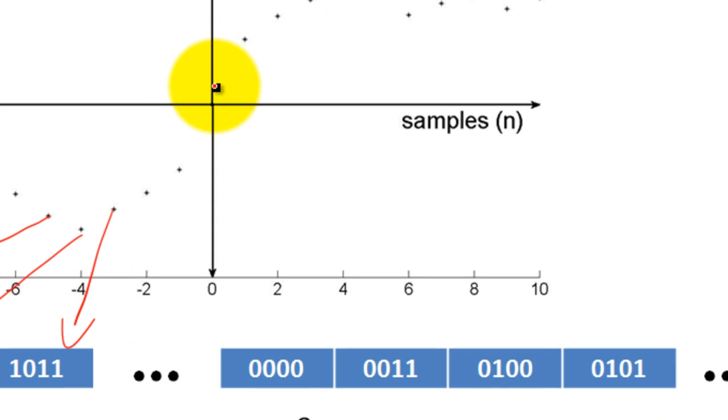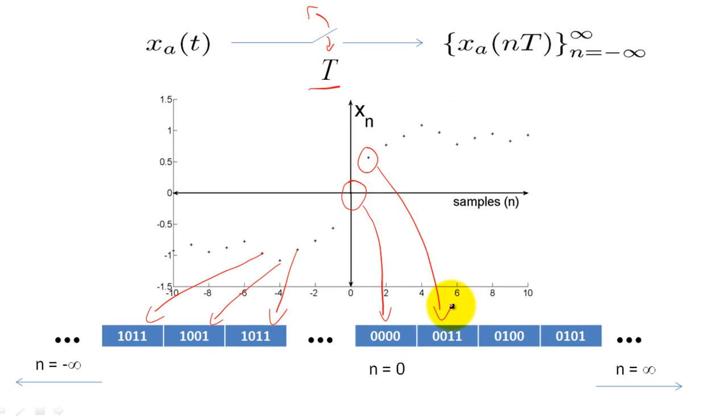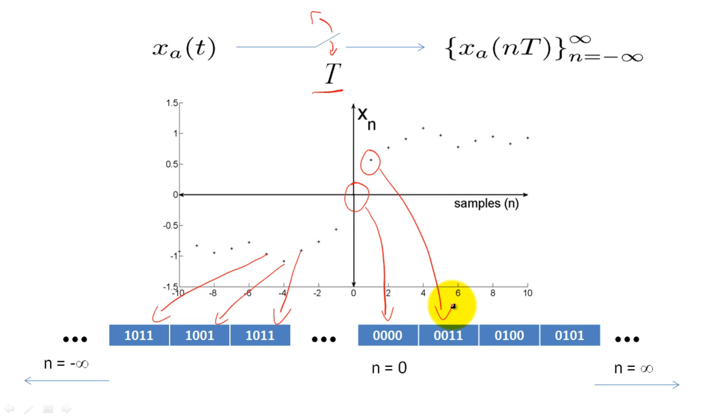For example, this sample here is stored as a 0 in memory, and the next sample is stored as a 3. The values stored in memory become our discrete time signal, X sub N.